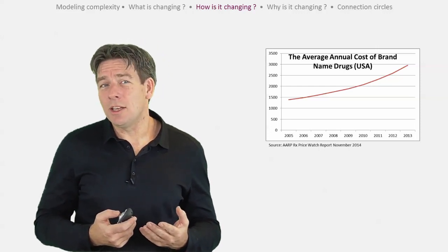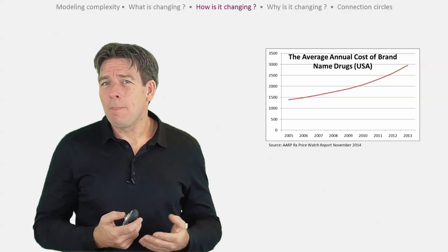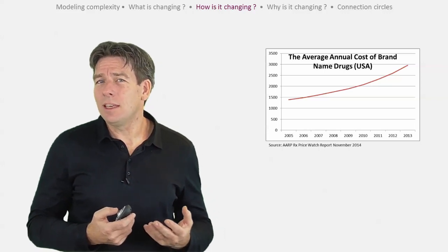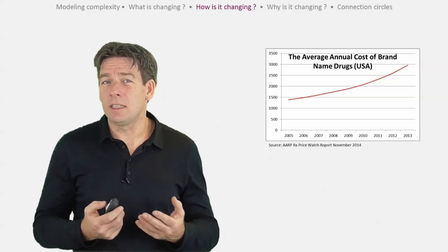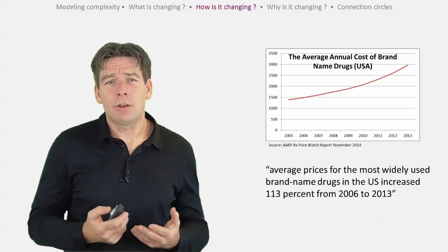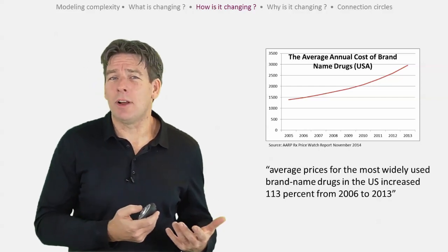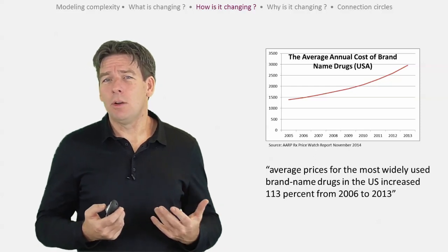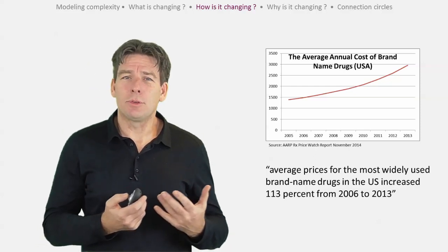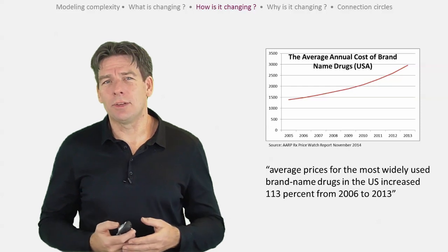We can also write what has been changing over time as a problem statement that describes how the behavior of the key variable has evolved over a specific period of time. Here it could be: the average prices for the most widely used brand name drugs in the US increased 113% from 2006 to 2013.